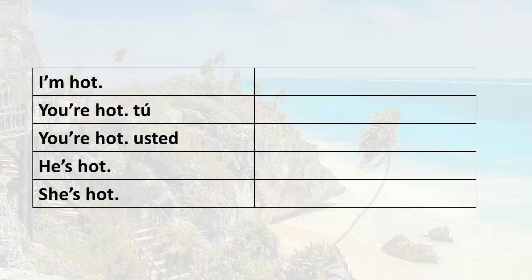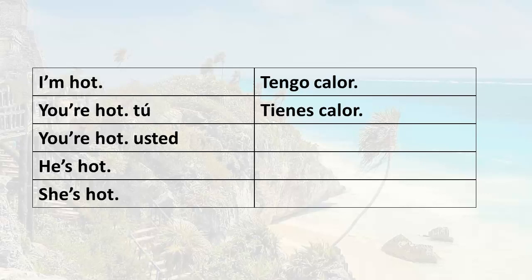Now that you know how to say I'm hot — tengo calor — what about the other forms? How would you say you're hot using tú? Remember, this means you feel hot. It's just a statement: you're hot, you feel hot. The verb form is tienes. Tienes calor. You're hot.